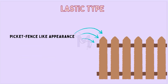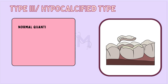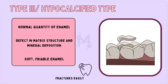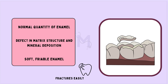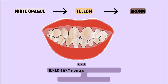In the hypocalcified type or type 3, the quantity of enamel is normal. However, there are defects in the matrix structure and mineral deposition. This leads to soft and friable enamel which fractures quite easily. The colour of the tooth also tends to vary from white opaque to yellow to brown, which is why amelogenesis imperfecta is also known as hereditary brown opalescent teeth or hereditary brown enamel.